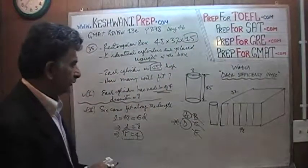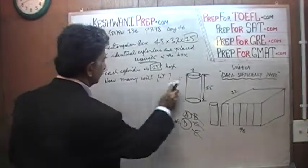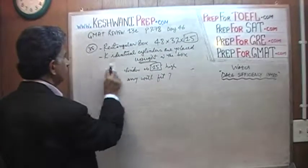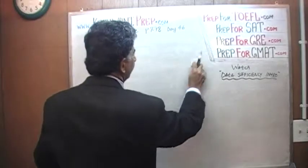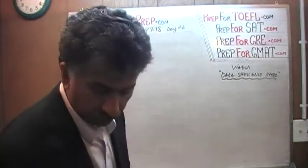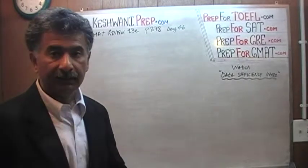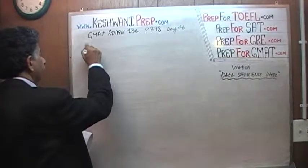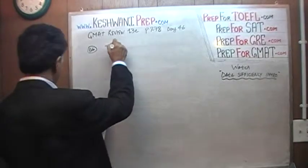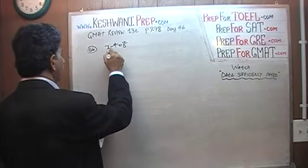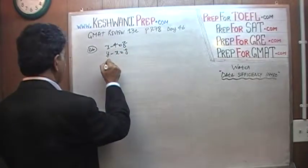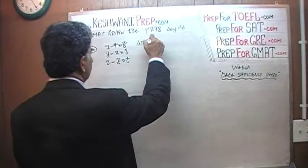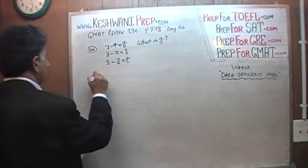Let's do one more. The next problem is quite simple. Here we go: x minus 4 equals z; y minus x equals 8; and 8 minus z equals t. The question simply is: what is z? In the first statement they tell us that x equals 7.